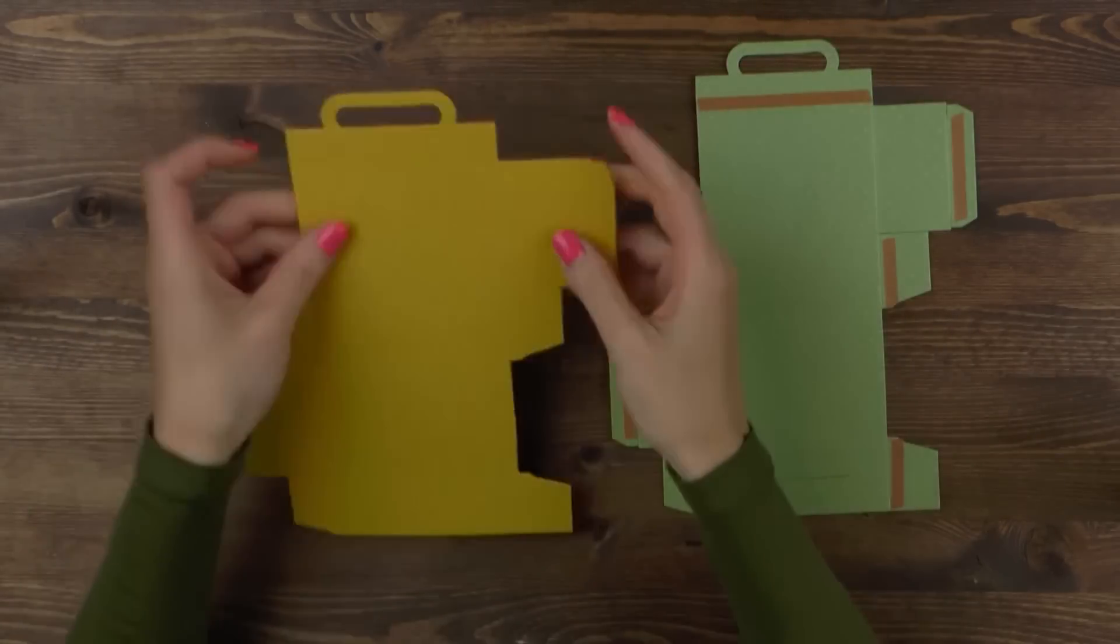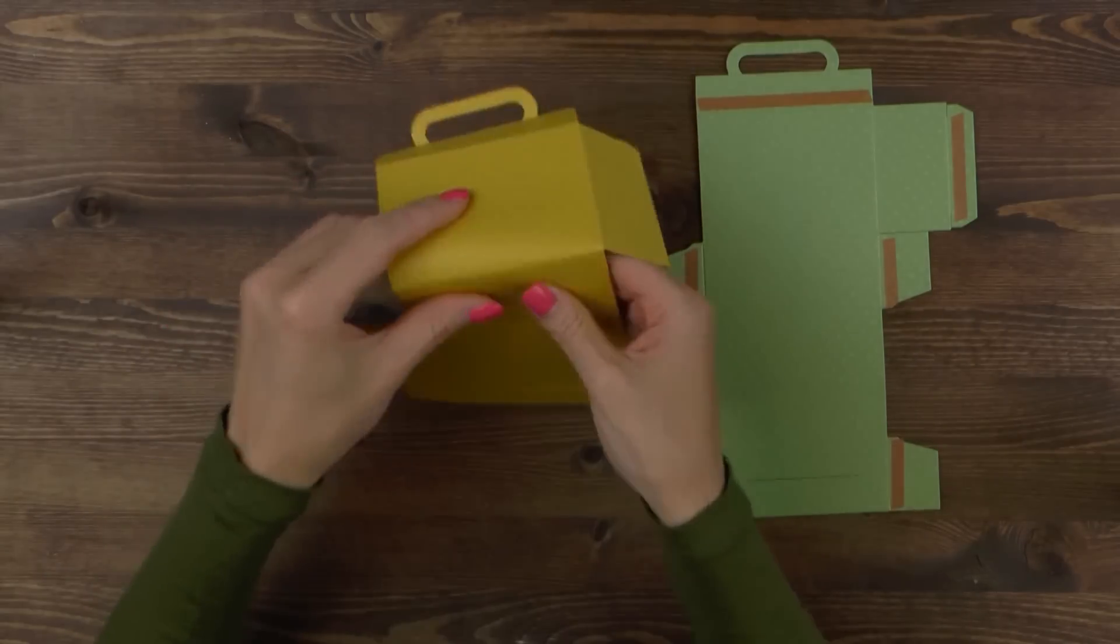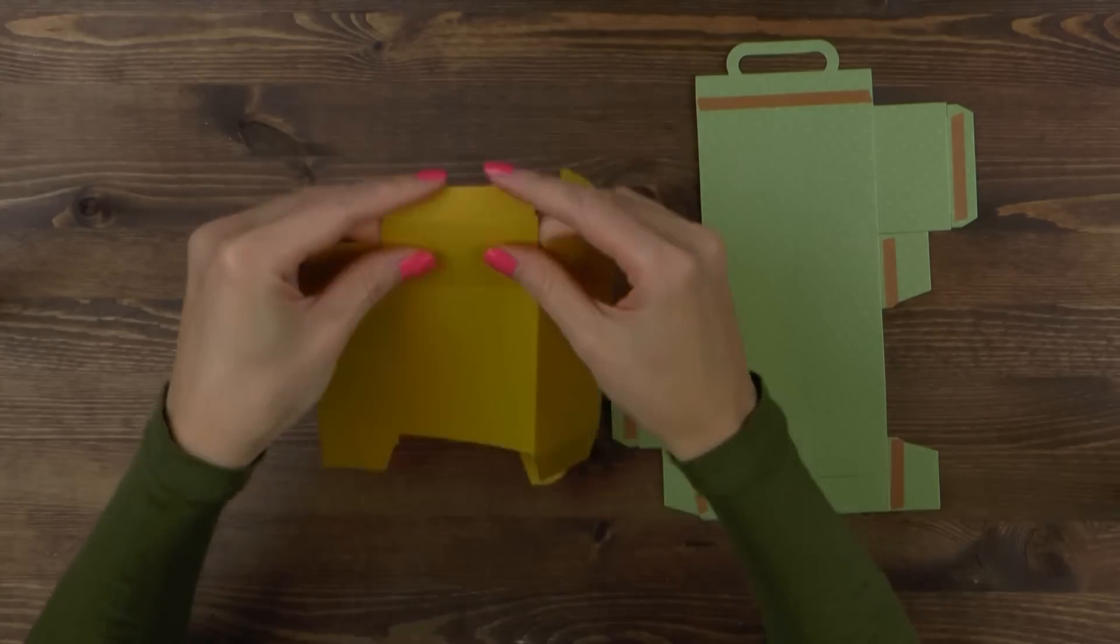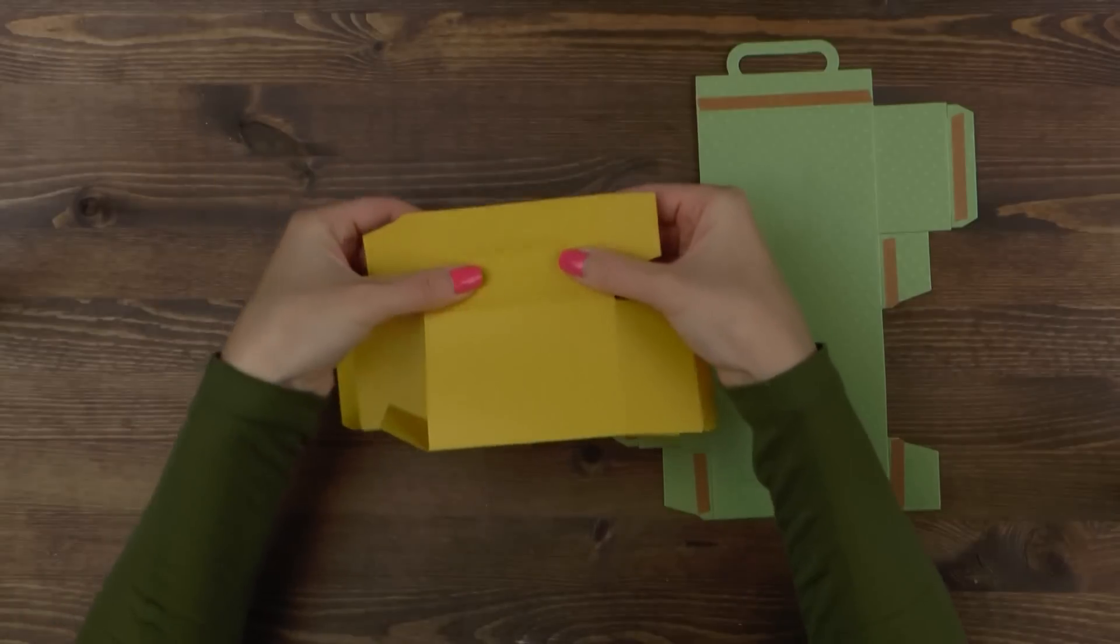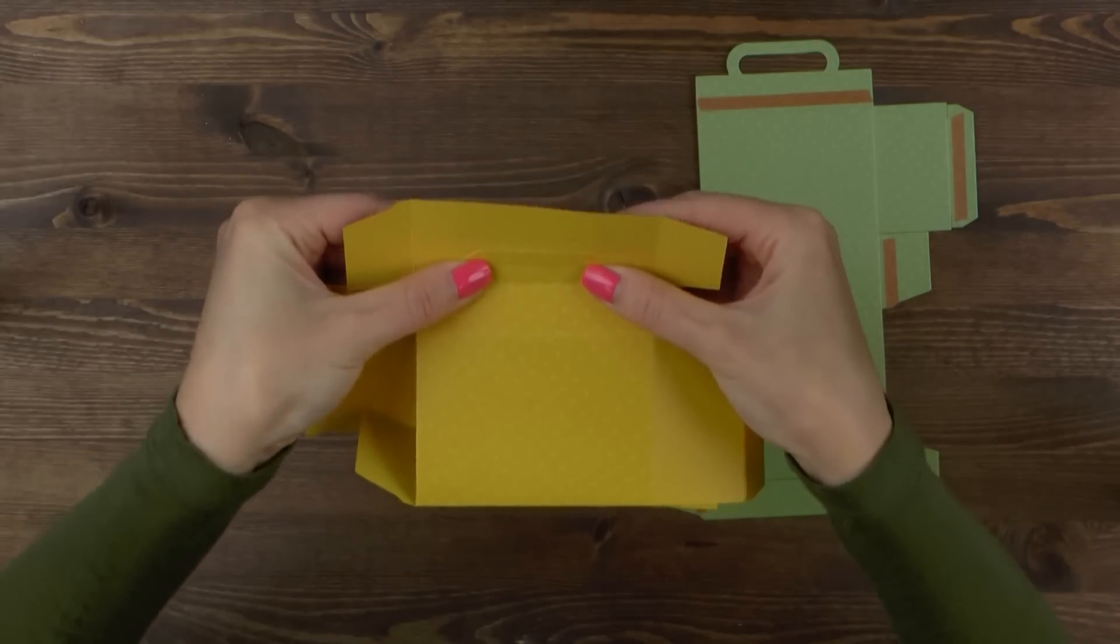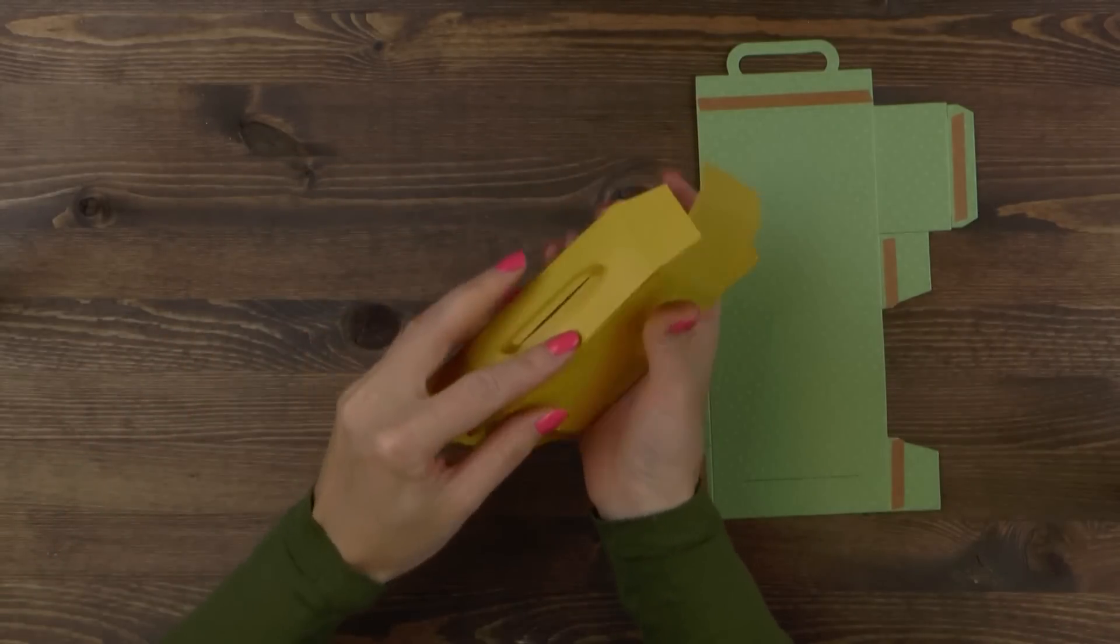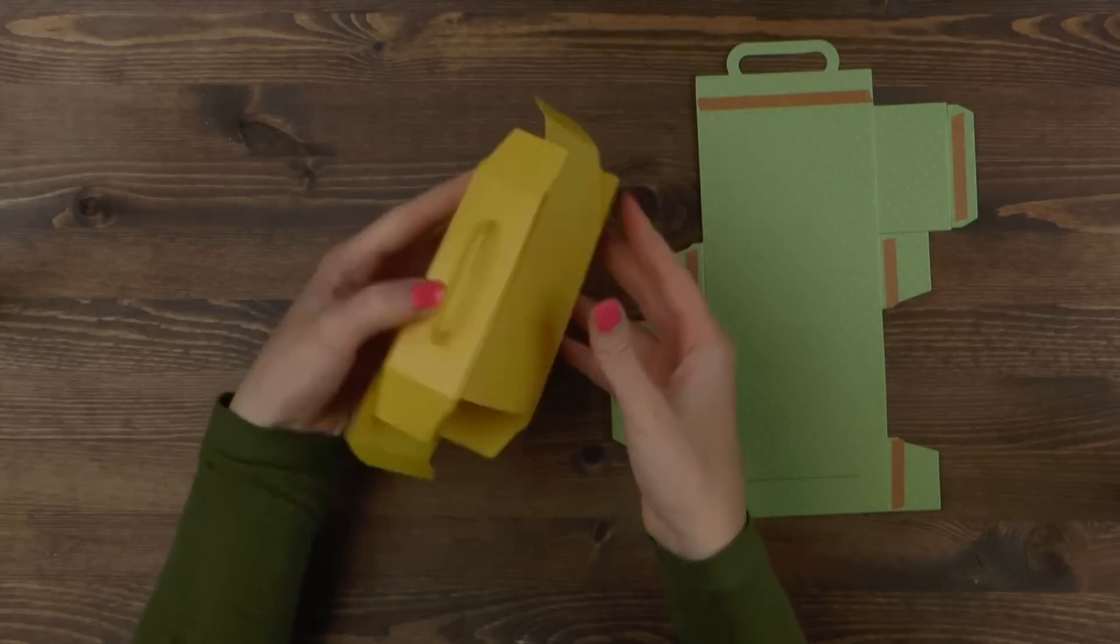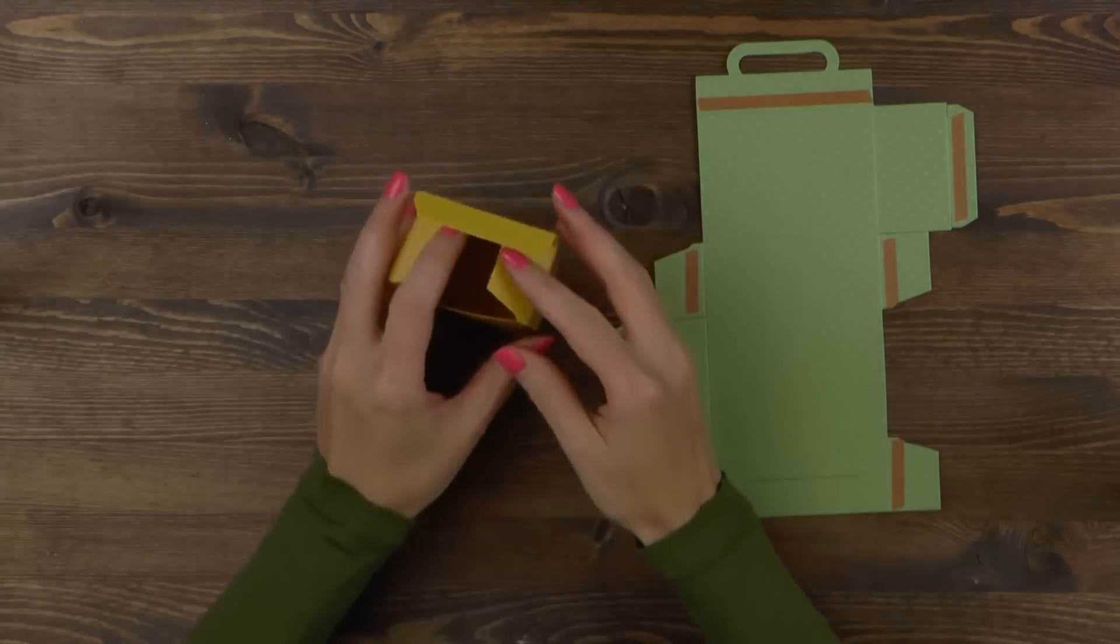I'm first going to put together a box without any adhesive. I'm folding on all score lines to make it easier to form the body of the box. To put the box together you want to first insert the handle into the opening. It's very easy to do when you place your die cut like so and gently slide the handle into the opening. From there you can easily close both sides.